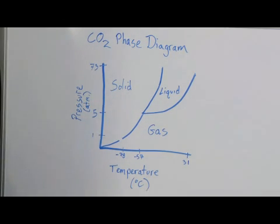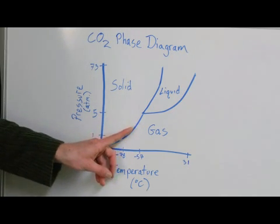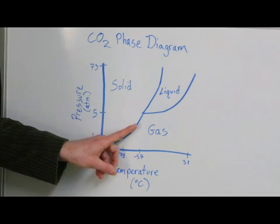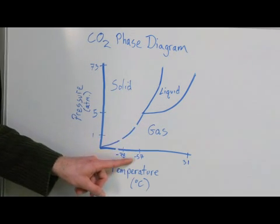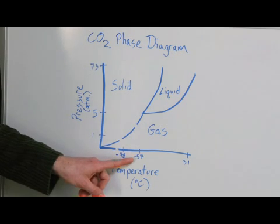If you were to increase the pressure, though, say maybe to five atmospheres, you'll notice that we don't need quite as much temperature to make it freeze anymore. Right here, CO2 at five atmospheres, CO2 will freeze at negative 57 degrees Celsius. So a dramatic change.